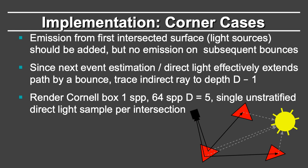There are some corner cases to consider. Emission from the first intersected surface — that is, if you hit the light source directly — should be added. But on subsequent bounces, you don't add in the emission because you are already considering direct light or emission from the light sources. Furthermore, since next event estimation or direct lighting effectively extends the path by a bounce, you trace the indirect ray only to depth d. You will re-render your Cornell box scene with one sample per pixel or 64 samples per pixel with d equal to 5.